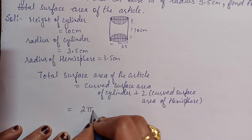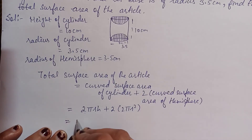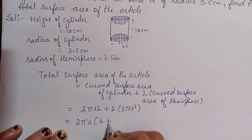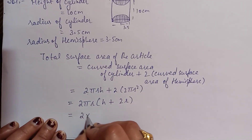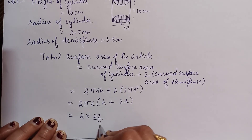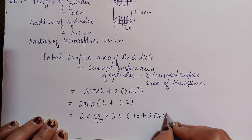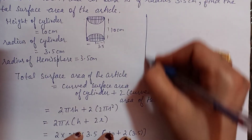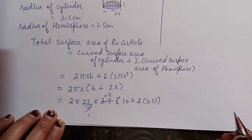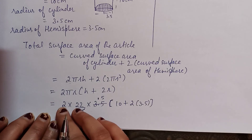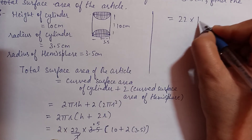Curved surface area of cylinder = 2πrh. Curved surface area of hemisphere = 2πr². Taking 2πr common: 2πr(h + 2r... wait — so 2πrh + 2×2πr². Now add values: 22/7, r = 3.5, h = 10, plus 2×3.5 = 7. After cancellation: 7 ones are 7, 7 fives are 0.5 — giving 0.5. So value becomes 22 × 52 = ... we get value here.